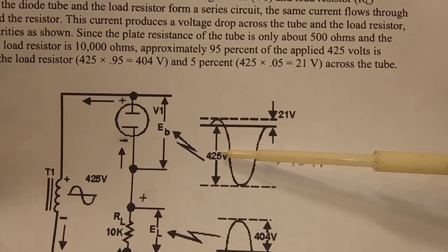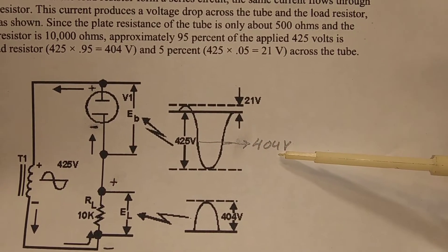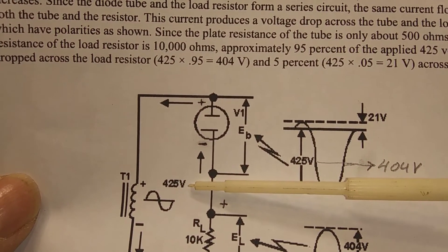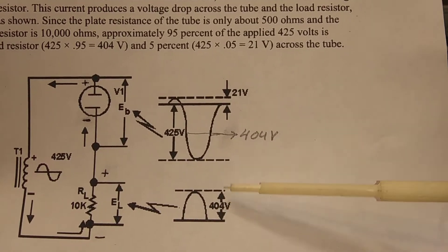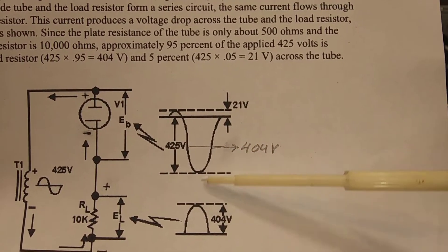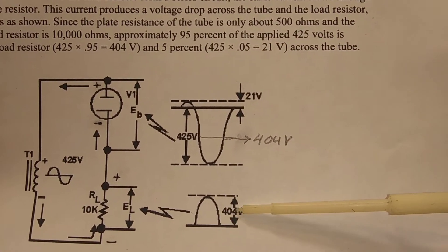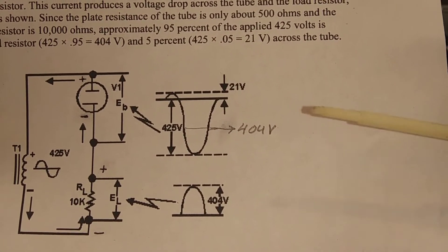I did notice an error in the book. This should actually be 404 volts. Because the total voltage here is 425. And obviously you can't have more than 425 in your circuit, which it would be if you added these two up. So anyway, that's just kind of a side point.